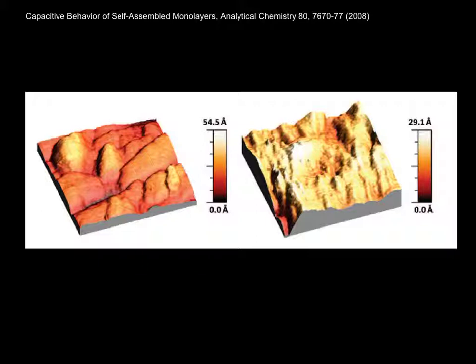This affects the capacitance per unit area. On the right, after electrochemically polishing the surface, we've eliminated these valleys, leaving a microscopic roughness that affects the ideality of the capacitance.